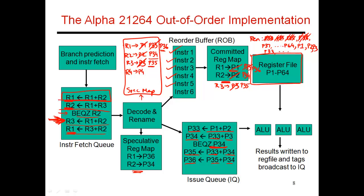One other thing to mention: if I have 64 physical registers and 32 architectural registers, that means I have 32 rename registers. That means I can track the temporary results of 32 different instructions, which means I can have 32 different in-flight instructions in my pipeline. So by having a reorder buffer with only six instructions, I'm actually under-utilizing my large register file. In reality, I could have a reorder buffer with at least 32 instructions. There are some instructions, like branches and stores, that don't need a rename register.